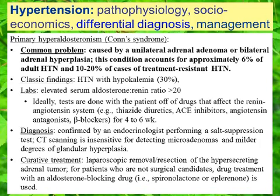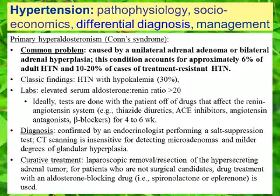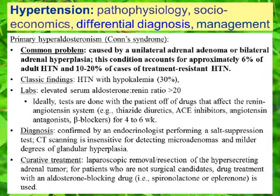Classic findings are treatment-resistant hypertension with hypokalemia, but only 30% of affected patients have the characteristic hypokalemia. Laboratory diagnosis is made by finding an elevated serum aldosterone-to-renin ratio greater than 20. Ideally, this test is done when the patient has been off drugs that affect the renin-angiotensin system for 4 to 6 weeks.